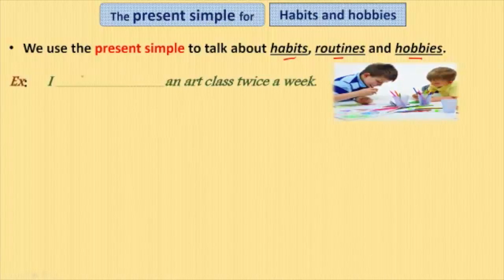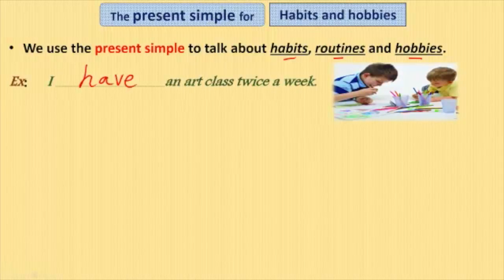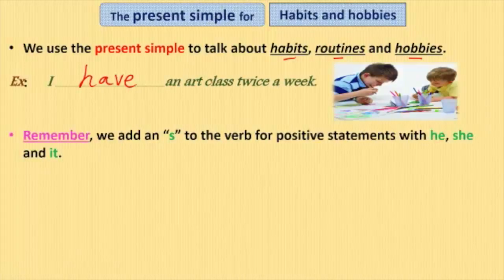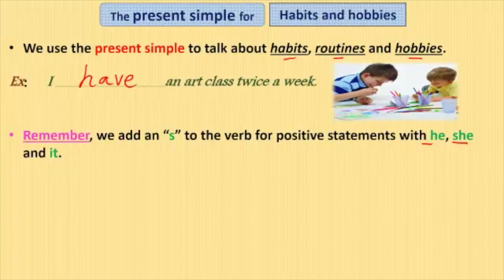Example: I have an art class twice a week. 'Have' is simple present. Remember, we add an S to the verb for a positive statement with he, she, and it. So if we change 'I' into 'he' or 'she', we will say...